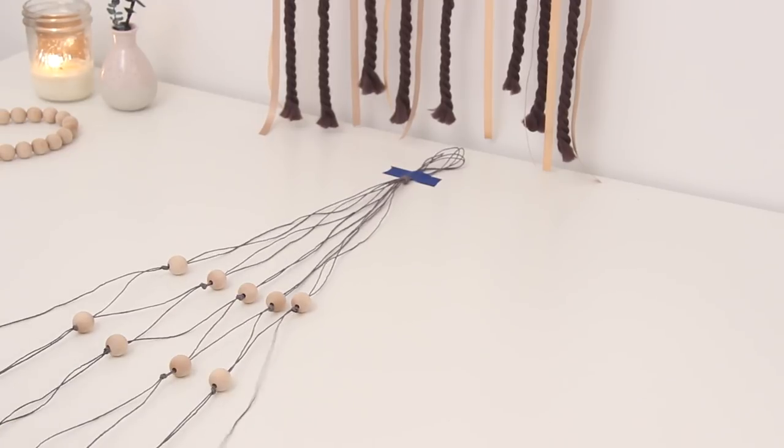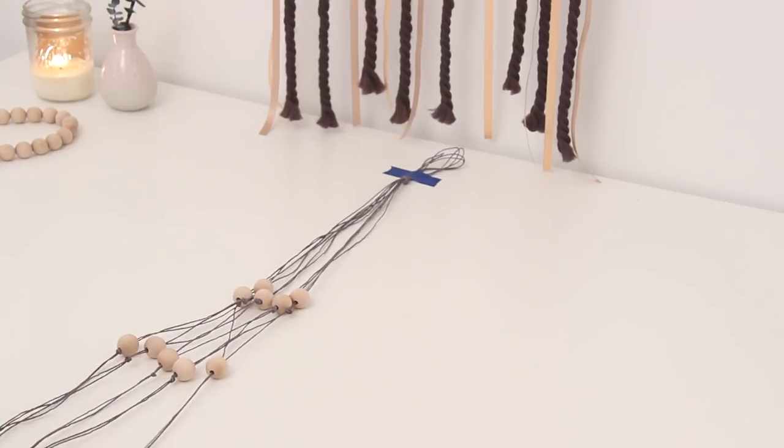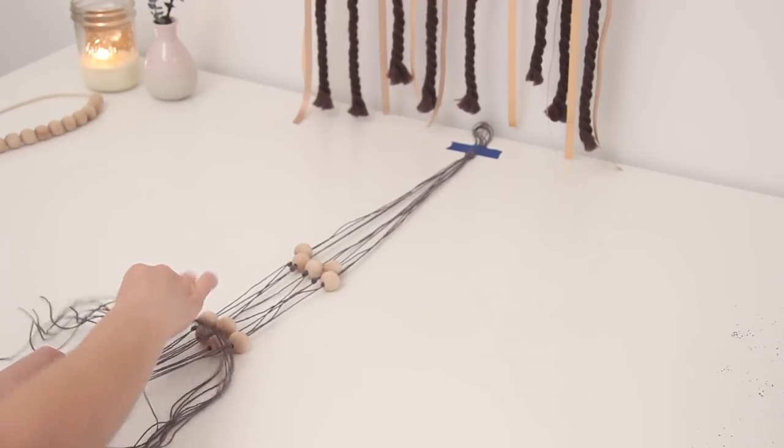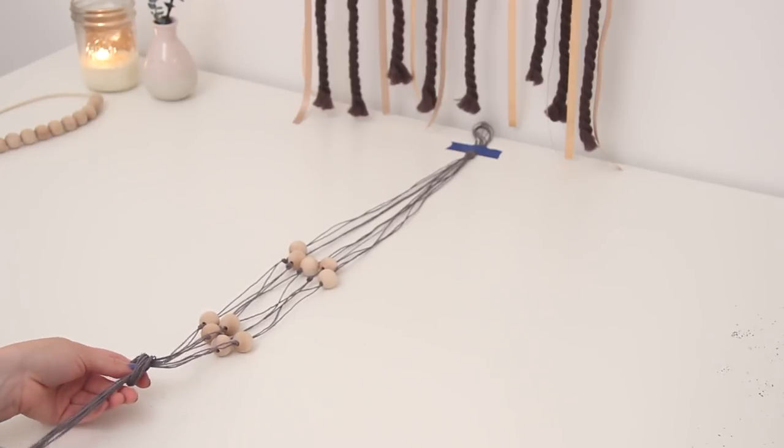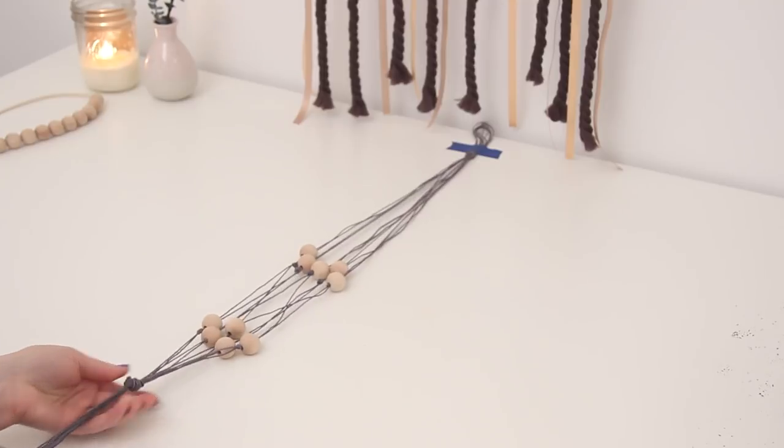Take all of them and tie another knot about six inches down on the bottom. This is what your pot is going to be resting on when you hang it up. The last step is just to trim the ends and there you have it. You can hang it up and enjoy.